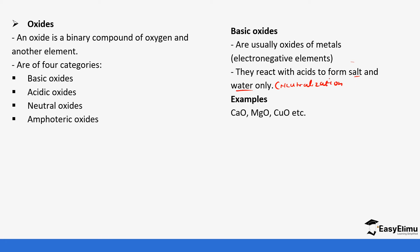Examples of basic oxides are calcium oxide, magnesium oxide, copper oxide, zinc oxide, etc. So metal oxides react with acids to form salt and water.